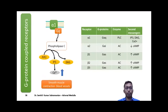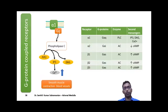For example, alpha-1 works with Gq-type G-protein, which stimulates phospholipase C. This converts phosphatidylinositol bisphosphate into inositol triphosphate (IP3) and diacylglycerol (DAG), increasing cytoplasmic calcium levels, which is essential for smooth muscle contraction in blood vessels. Similarly, various adrenoreceptors have specific G-proteins and second messengers to bring about diverse physiological actions of catecholamines.